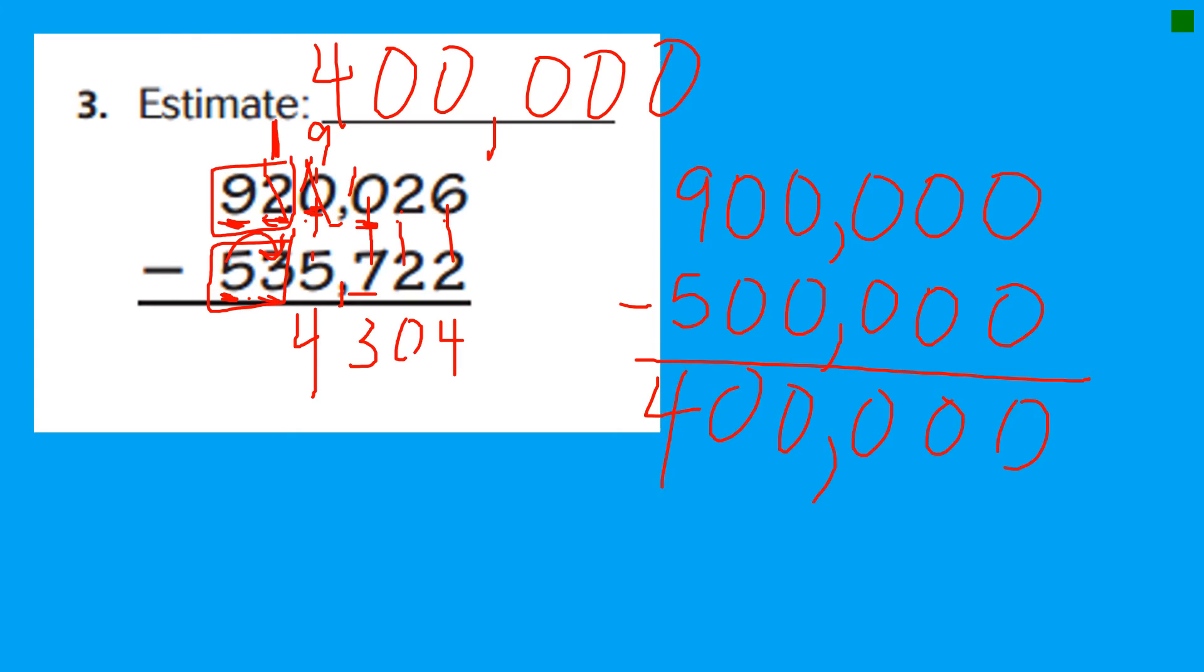And 1 minus 3. Regroup again. Goodbye, 900,000s. You now only have 8. Because I'm giving a set to the 10,000s place. So now I have 11 sets of 10,000. 11 minus 3.